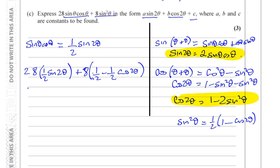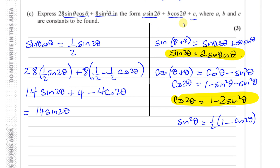Now I just tidy this up. 28 times a half is 14, so I have 14 sin 2θ. Eight times a half is four, giving plus four, and minus four cos 2θ. So the final answer is 14 sin 2θ minus 4 cos 2θ plus 4, meaning a is 14, b is negative four, and c is positive four. That's part C done — part D will be in the next video.